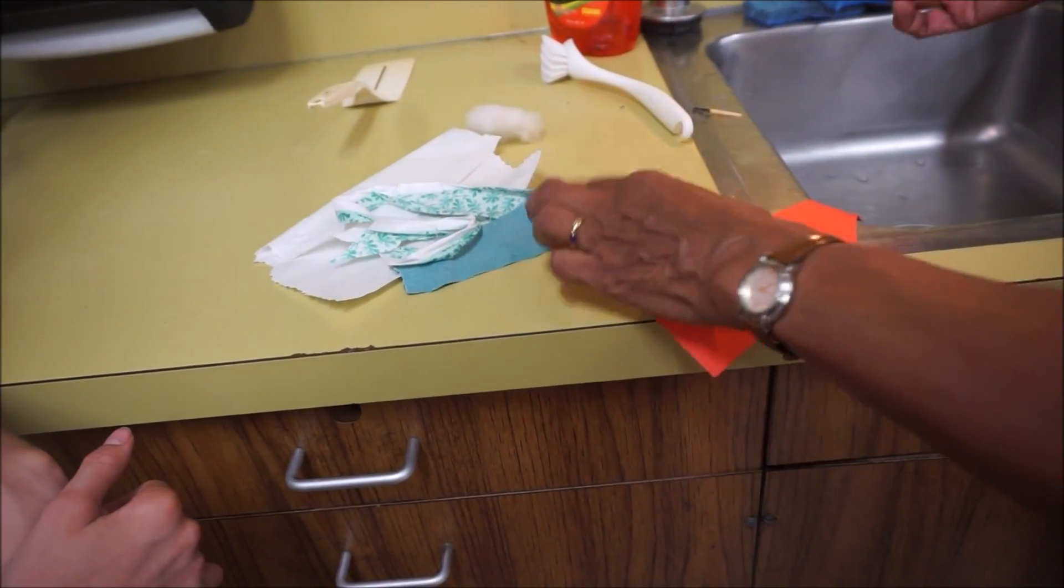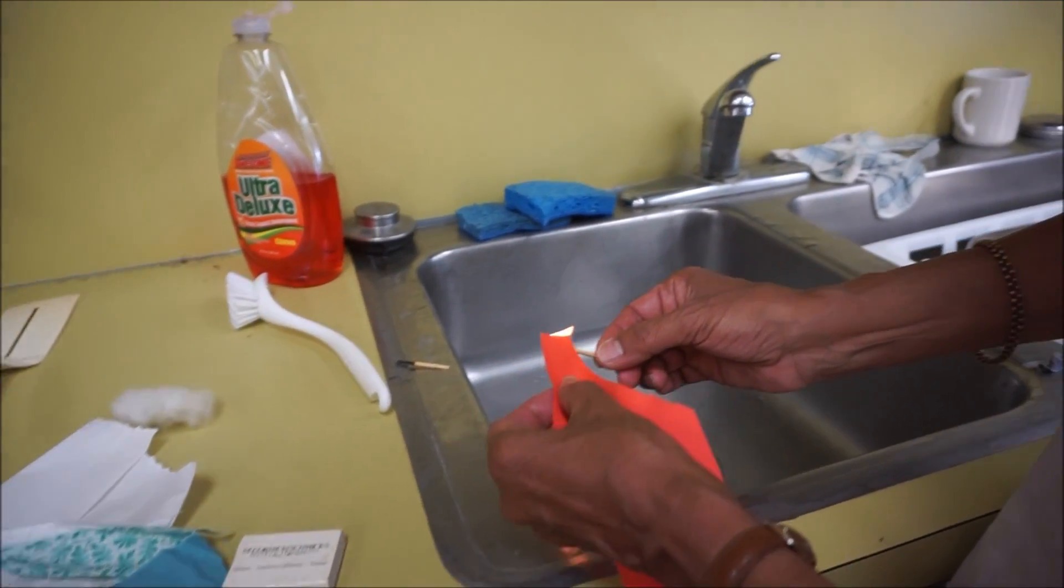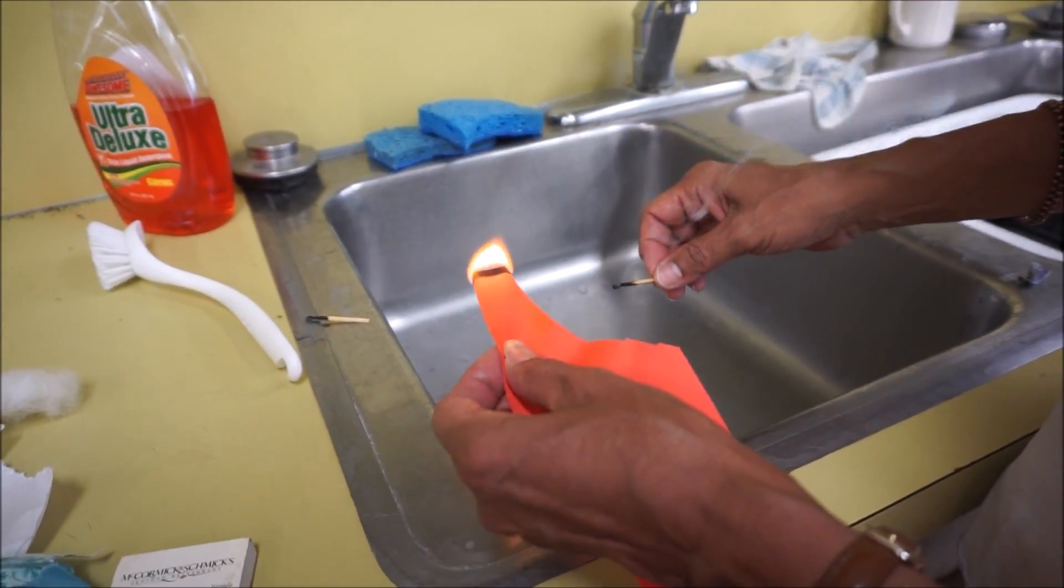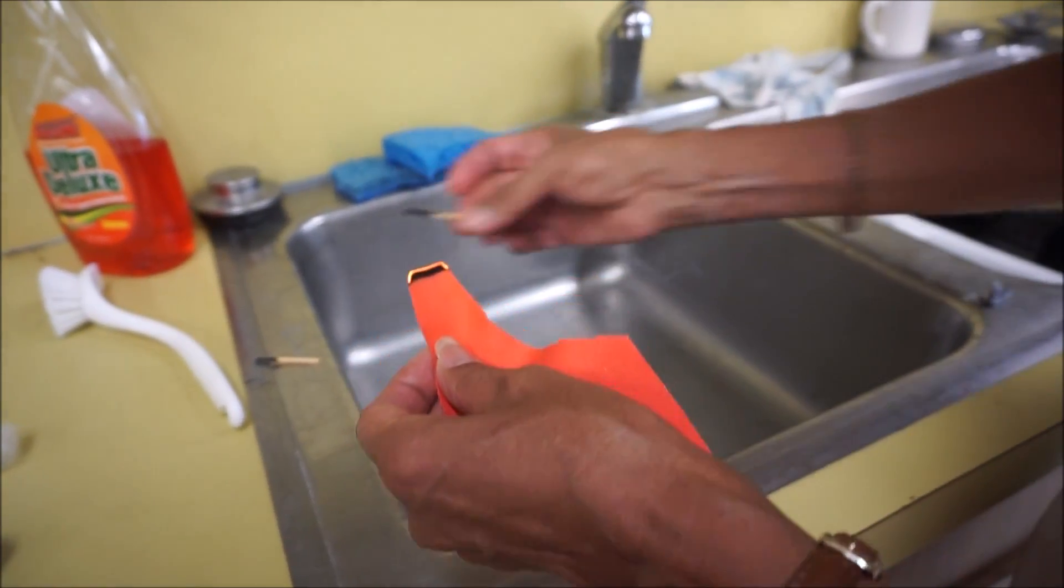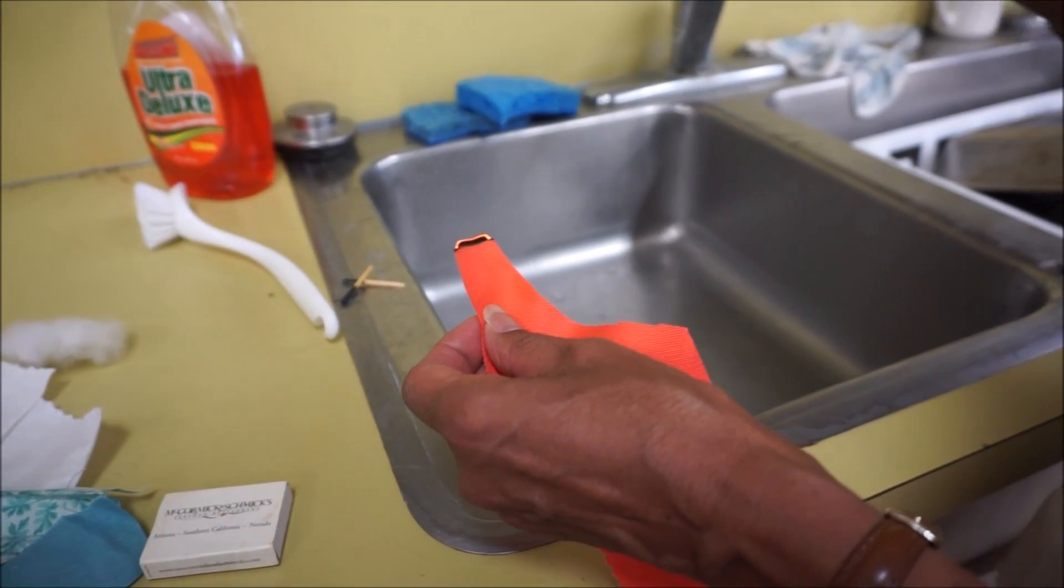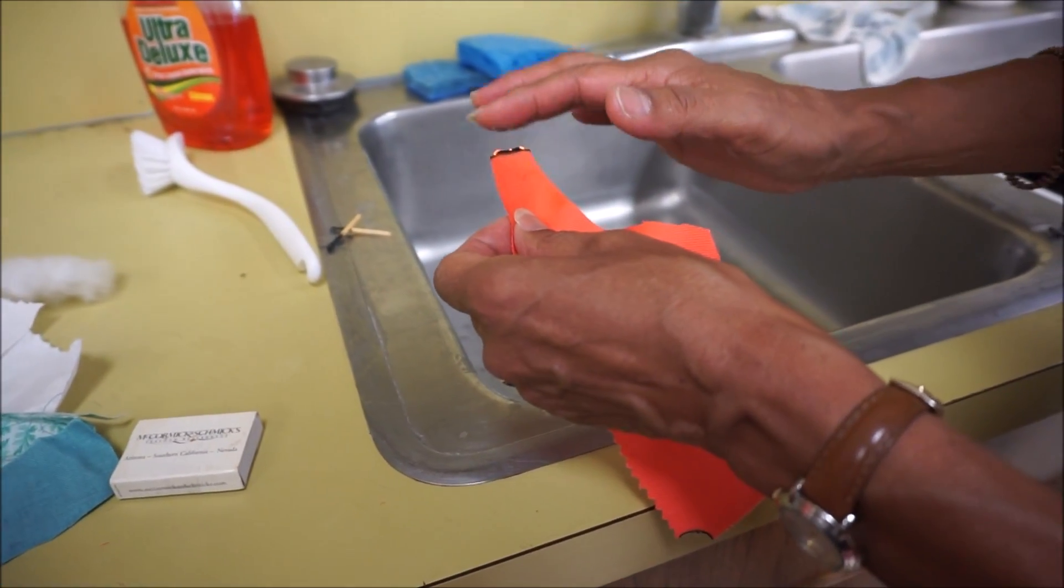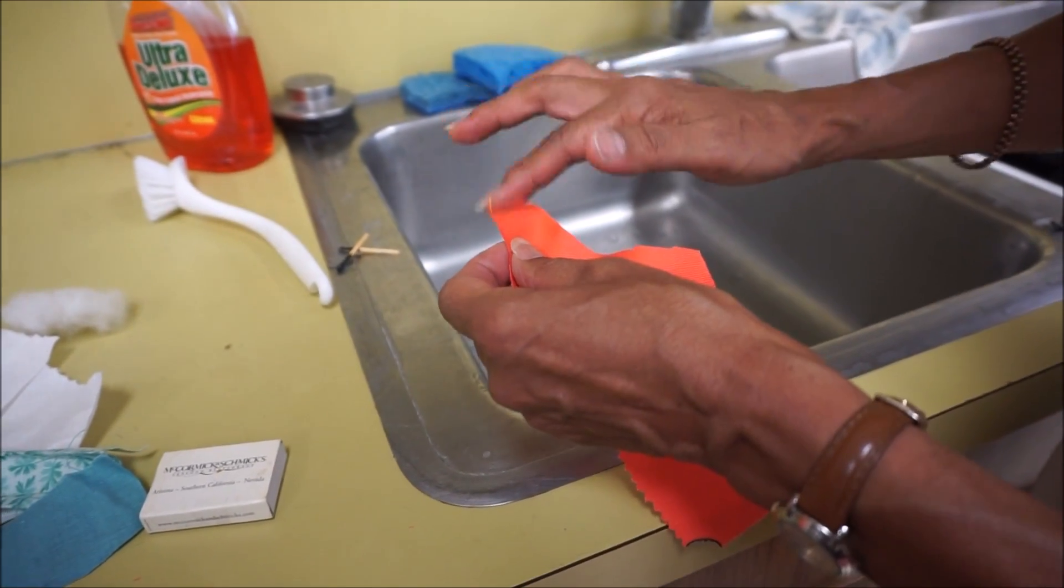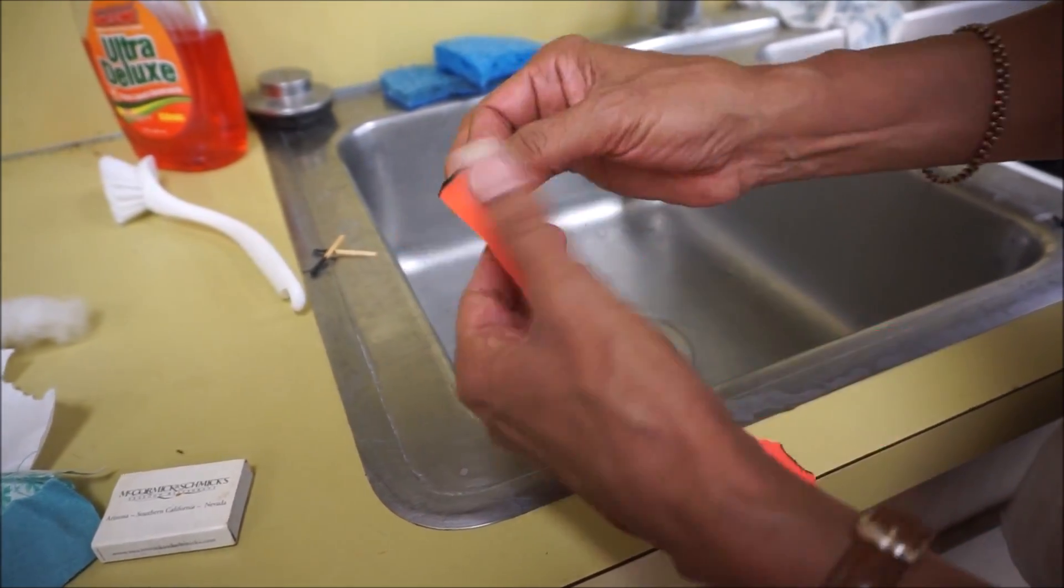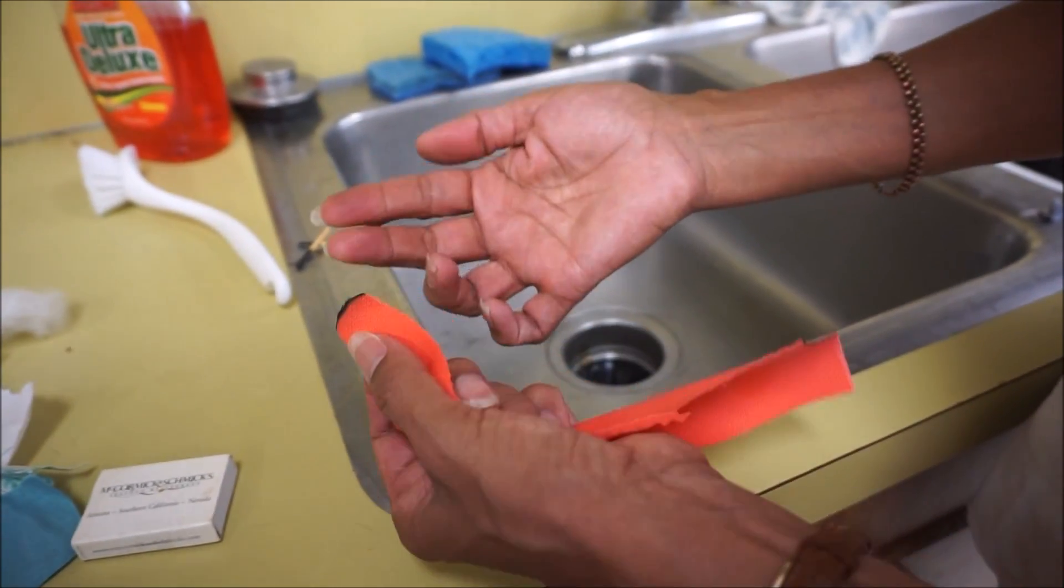We're going to start to burn just the edge of it, let it go a little bit, blow it out, and sometimes you can smell it and you'll know what that is. When it's a natural like this, it turns to ash and this one was very ashy.